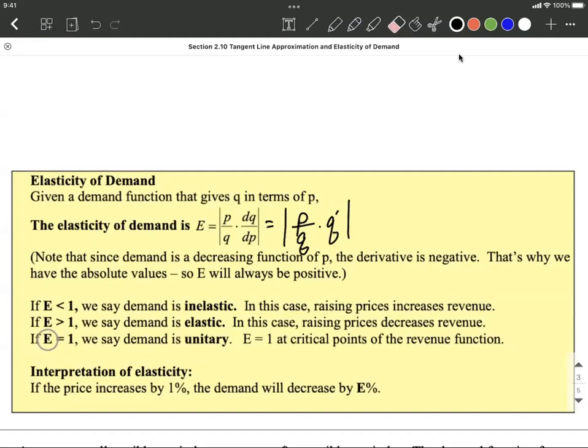Where we want to be sitting to have the most amount of revenue coming in as possible is when E, the elasticity of demand, equals one. We call this unitary. This is where we're going to get critical points of the revenue function, where we can maximize our revenue.